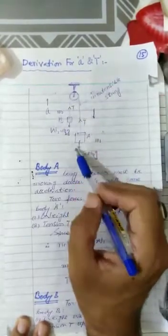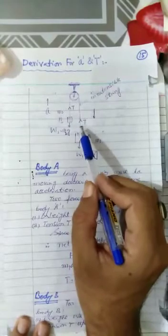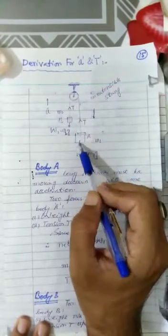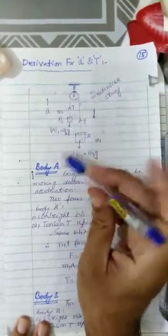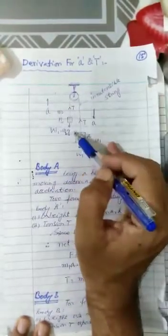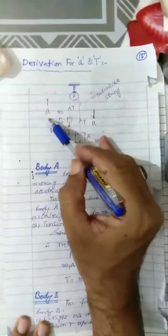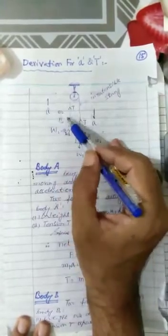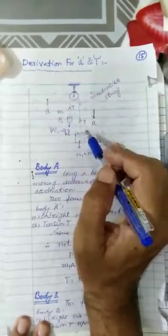So since both masses are different, as you release, you will see that body A will move downward with some particular acceleration. This is basically acceleration A. And body B will move with the same acceleration vertically upward. And throughout this string, tension will be same.